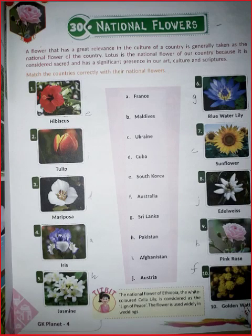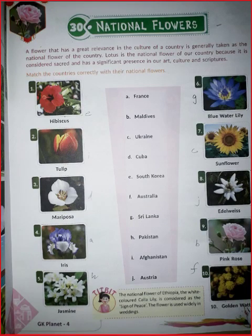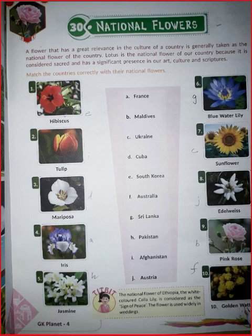Which flower is known as the sign of peace? Calla lily is called the sign of peace. Where is this calla lily found? Calla lily is found in Ethiopia. It is of white color.